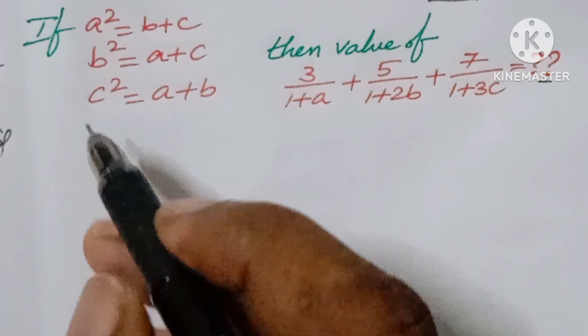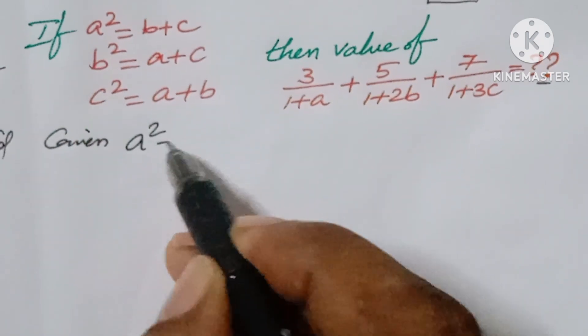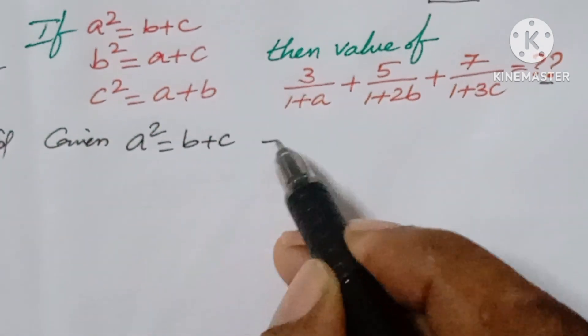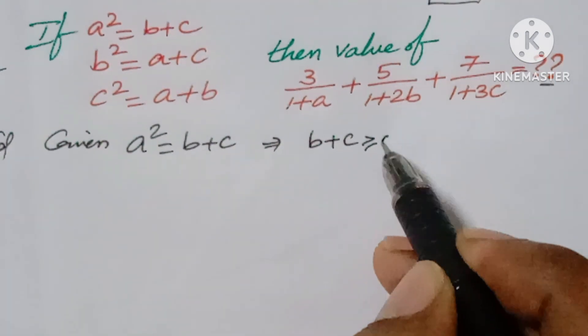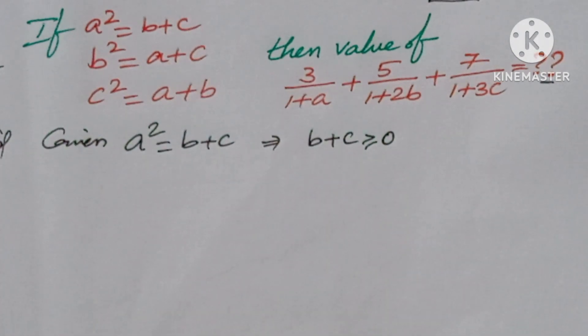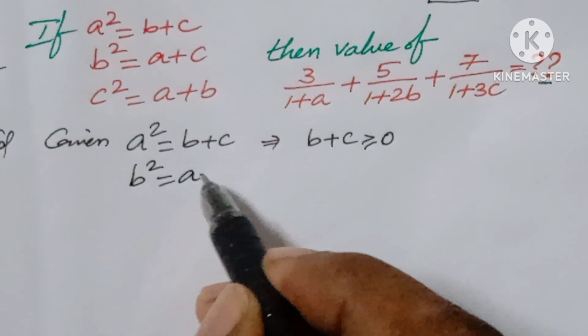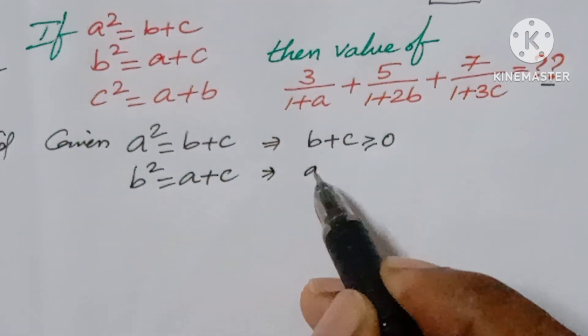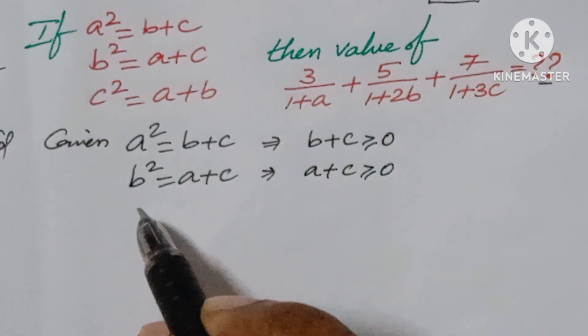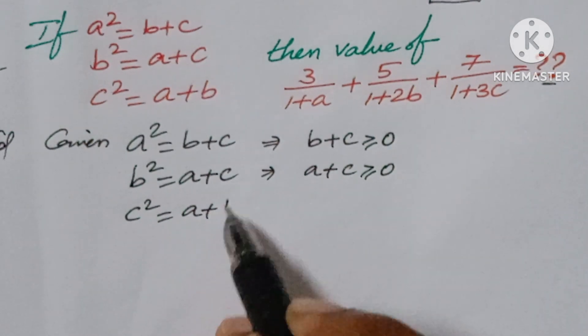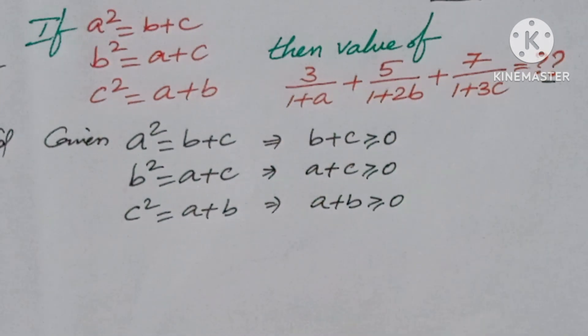So here given a² = b + c, that implies b + c value is greater than or equal to zero. In the same way b² is given a + c, here also a + c is greater than or equal to zero. And c² is given a + b, here also a + b is greater than or equal to zero.